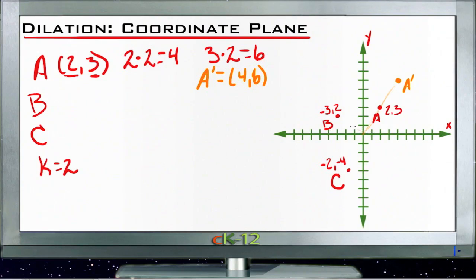So then we do the same thing with point B. Point B is negative 3, 2. So negative 3 times 2 gives us negative 6 for our new x-coordinate, and 2 times 2 gives us 4 for our new y-coordinate.